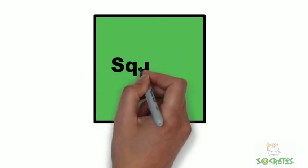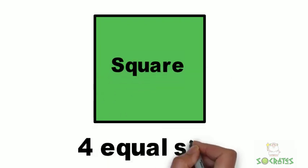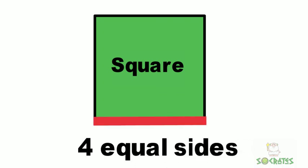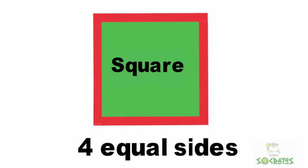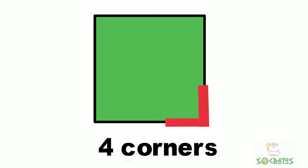Let's look at another shape. This is a square. A square also has four equal sides — one, two, three, four. And a square also has four corners — one, two, three, four.